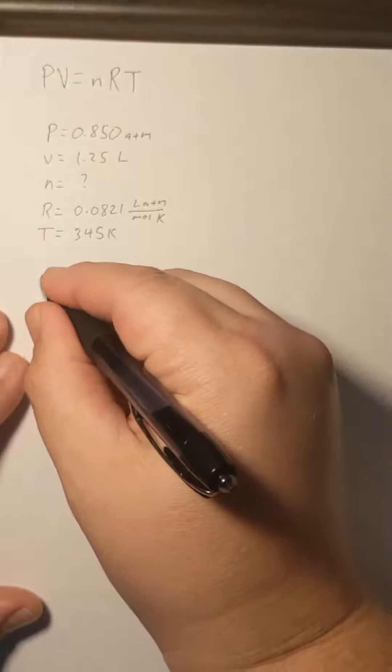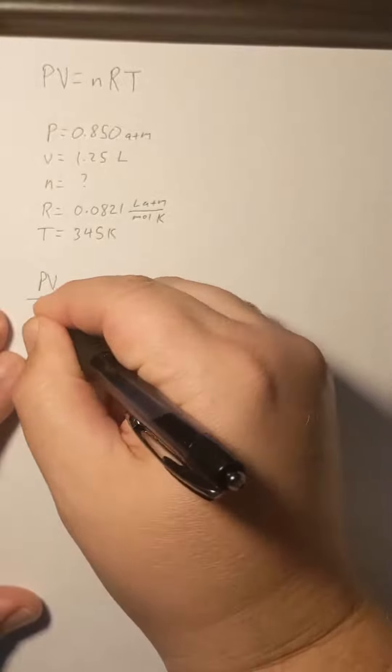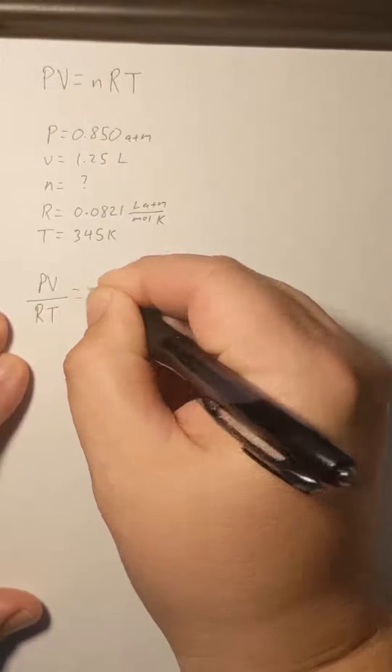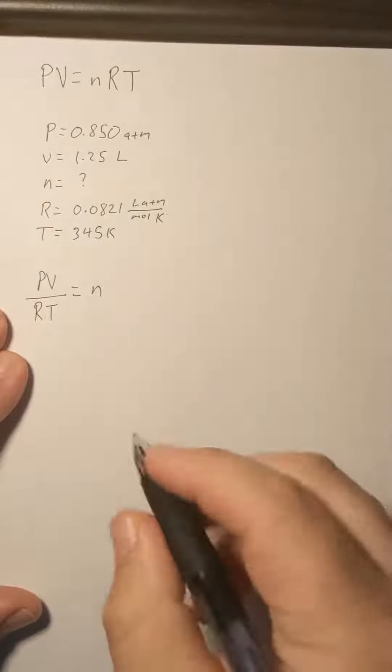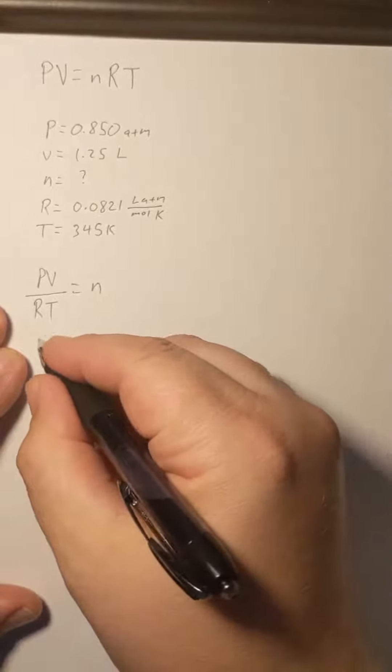So when we solve for n, we're going to get PV over RT will equal n. And so now we can substitute our terms in.